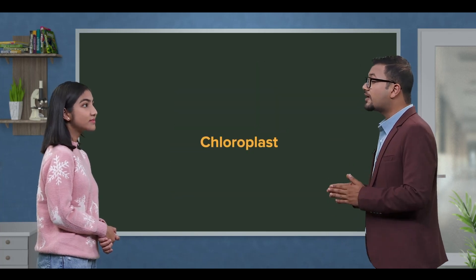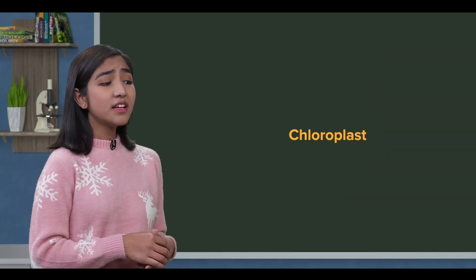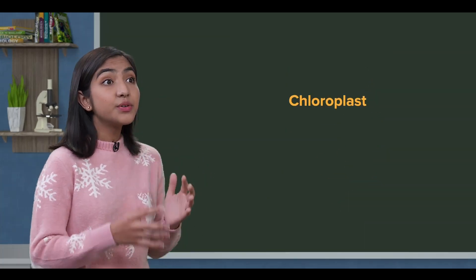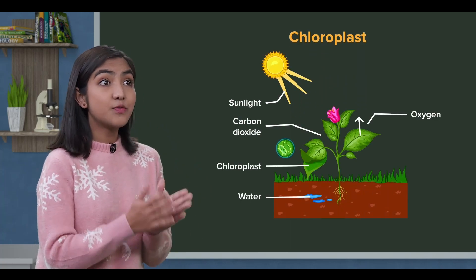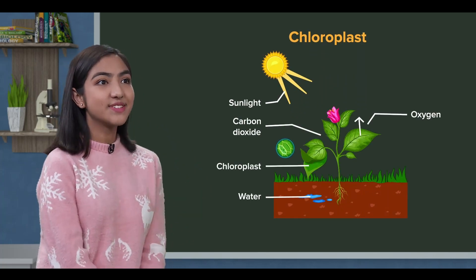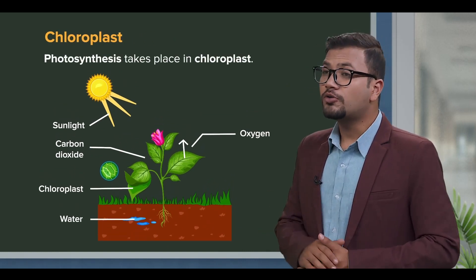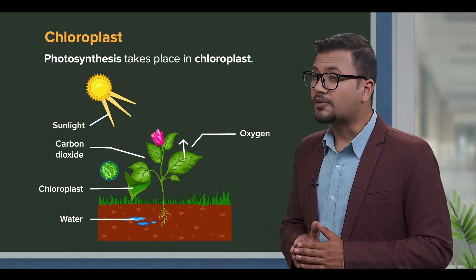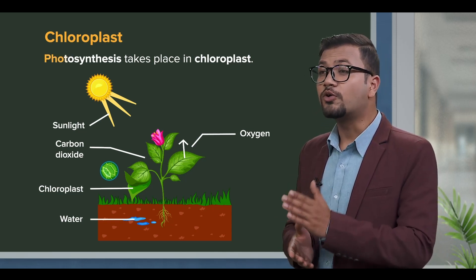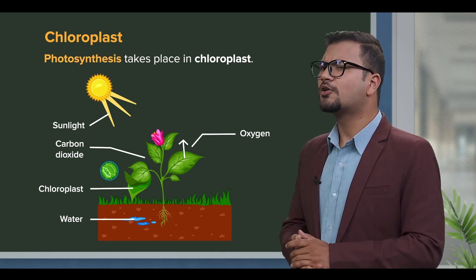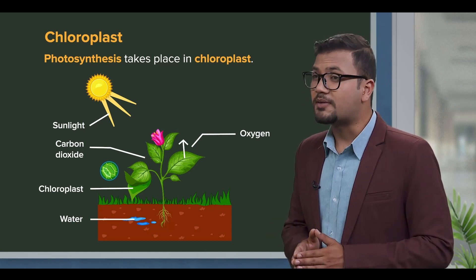Chloroplasts are found in the leaves of plants, and they help in photosynthesis. Chloroplasts can help in photosynthesis — there is a food process in the plant, or photosynthesis, that takes place in chloroplasts.